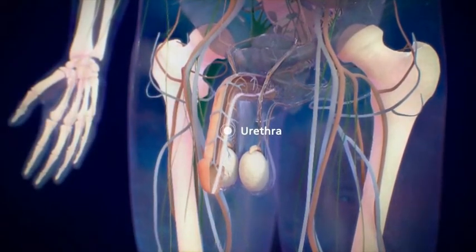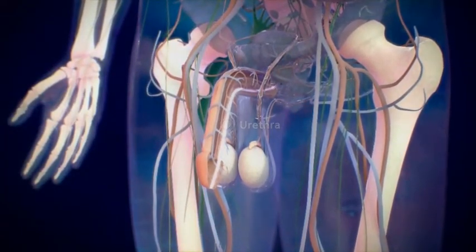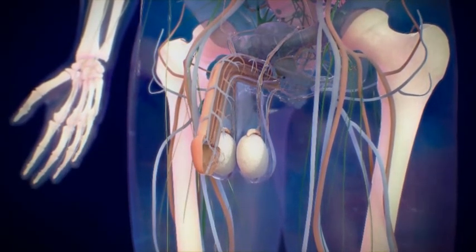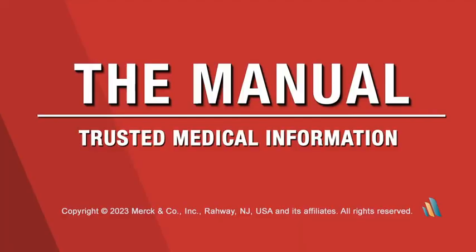The urethra is a channel that transports urine and semen out of the body. The opening of the urethra is located at the tip of the glans of the penis.